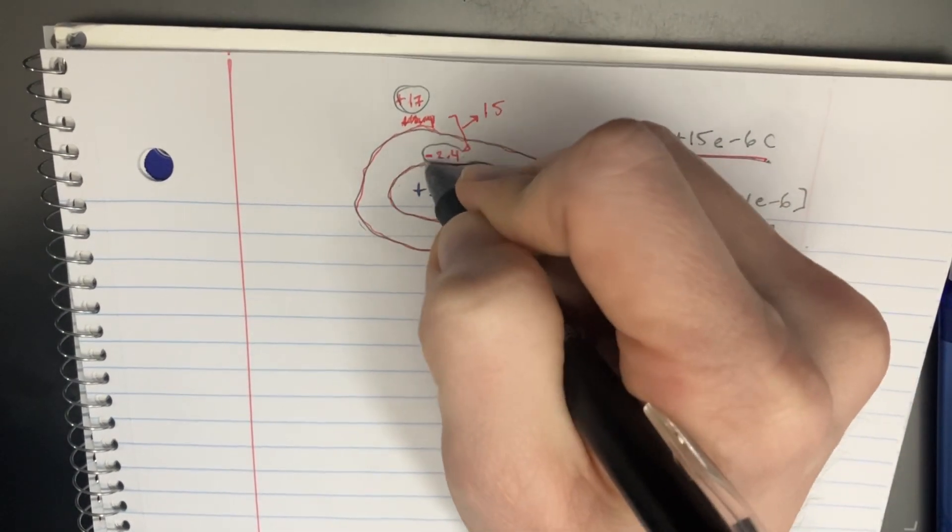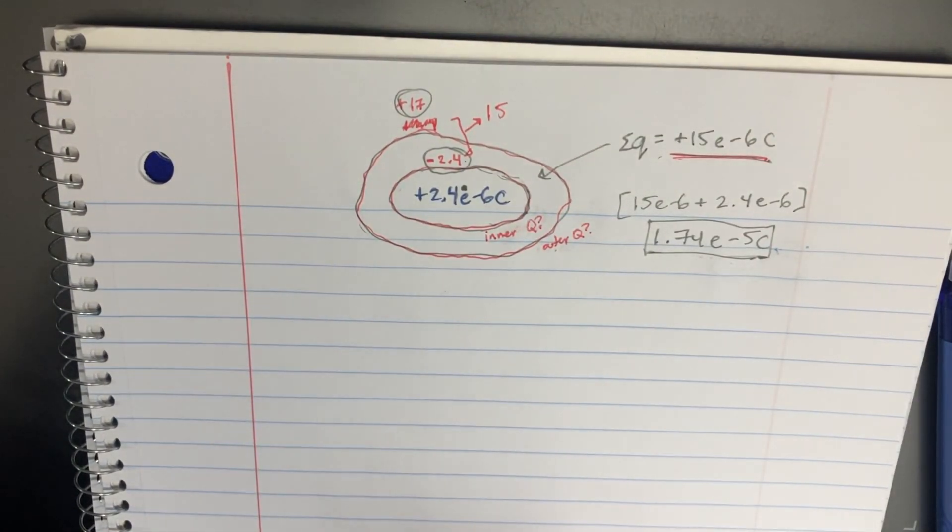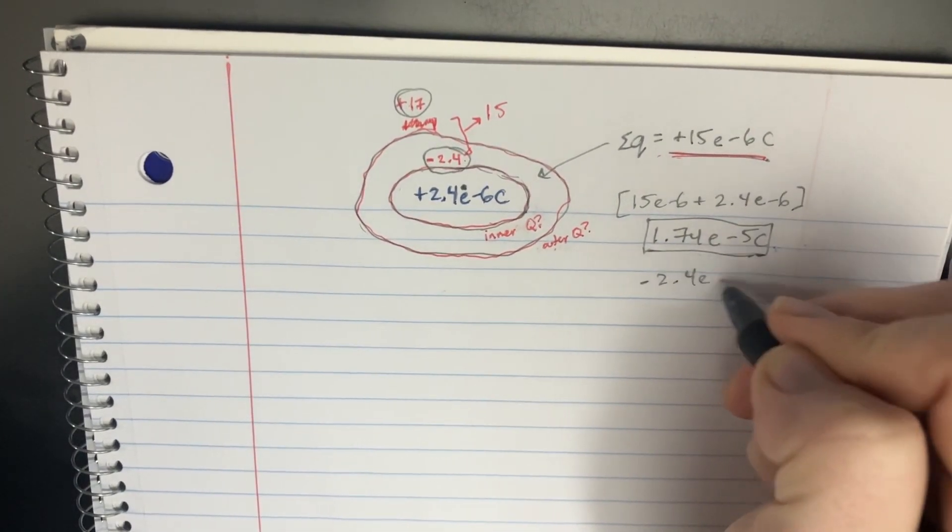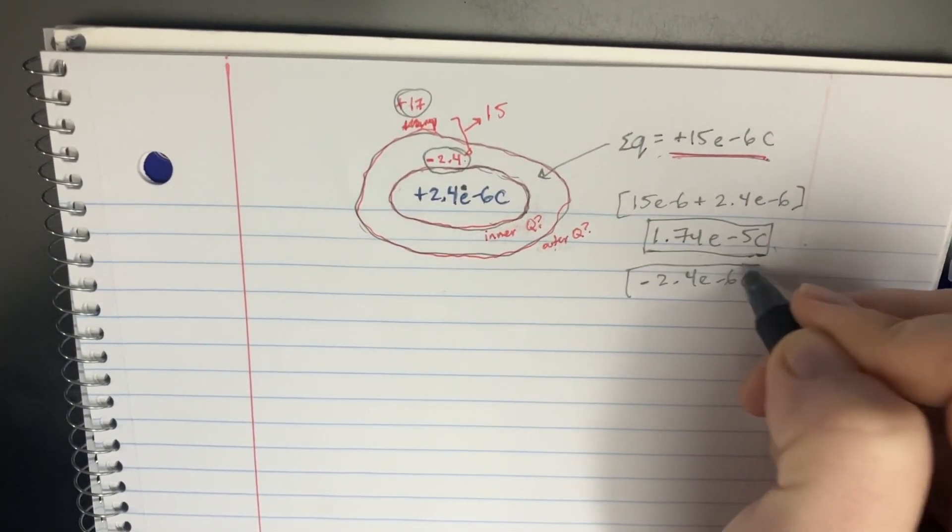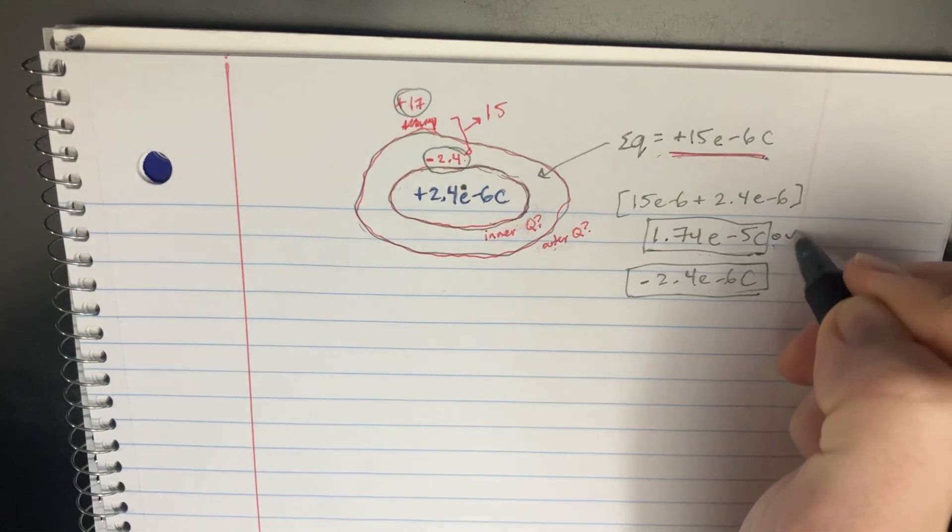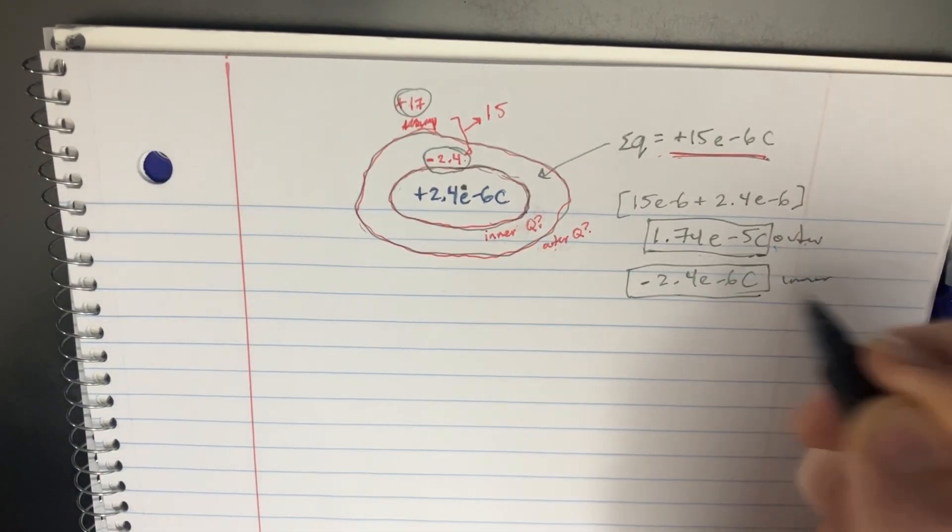And on the inner edge, well, it's pretty obvious. It's going to be negative 2.4e to the negative 6. And that's for the inner. Outer and inner. And we're just using some logic here.